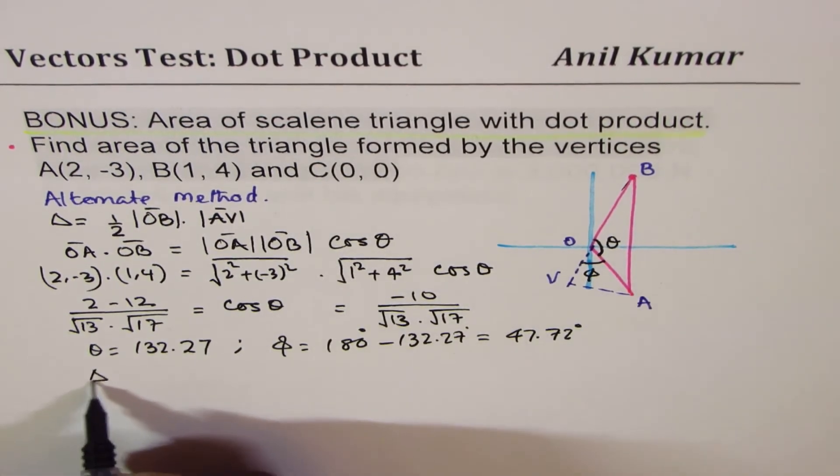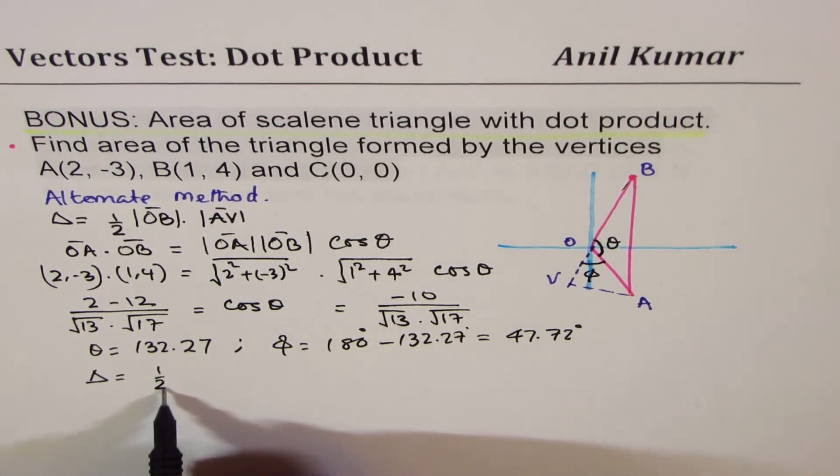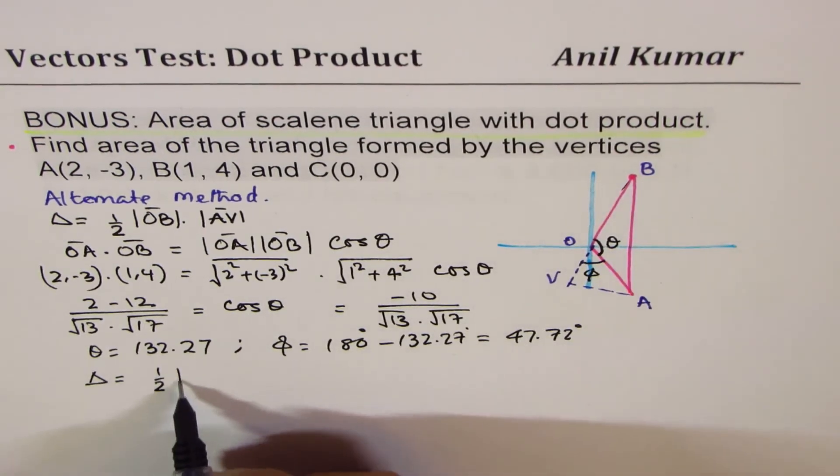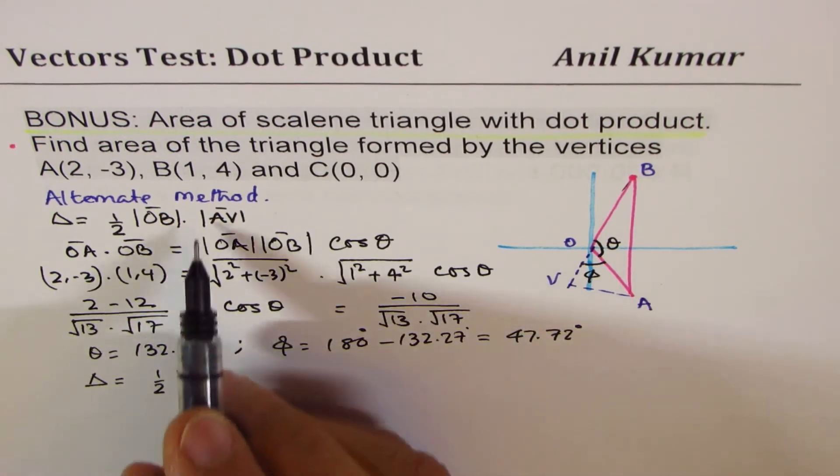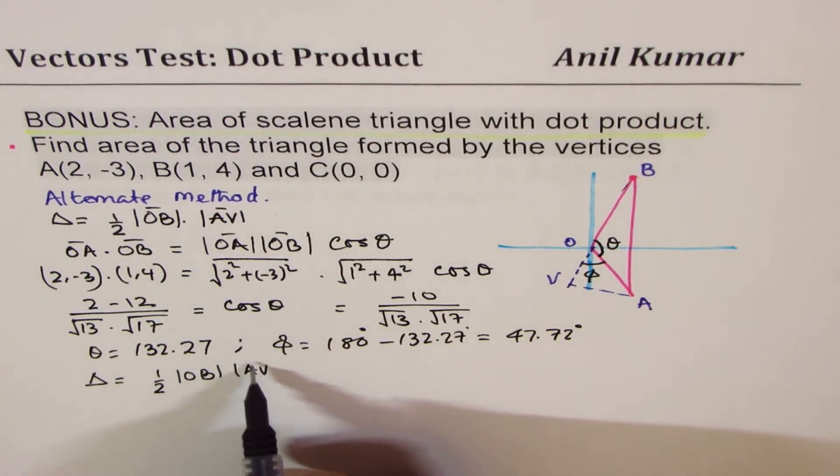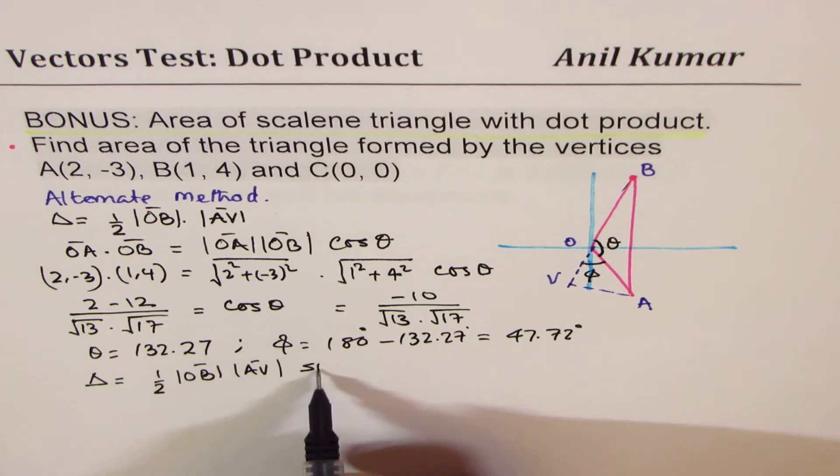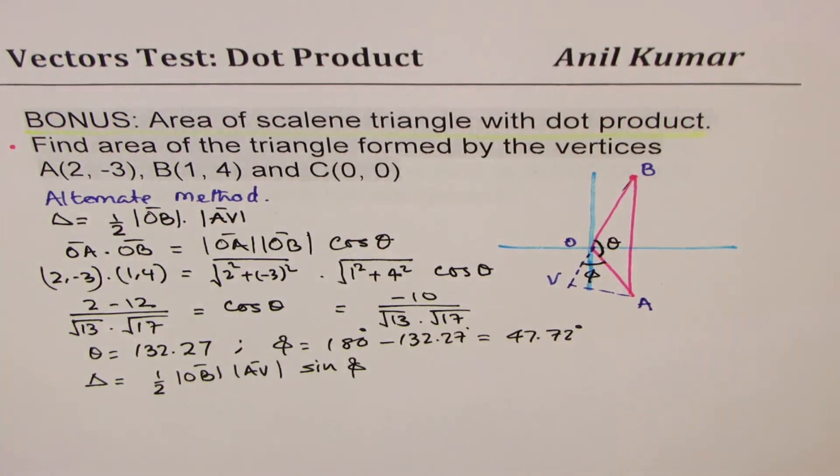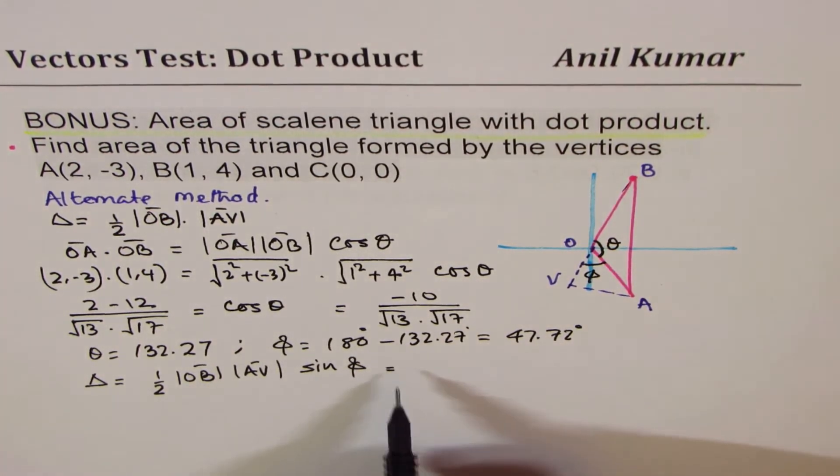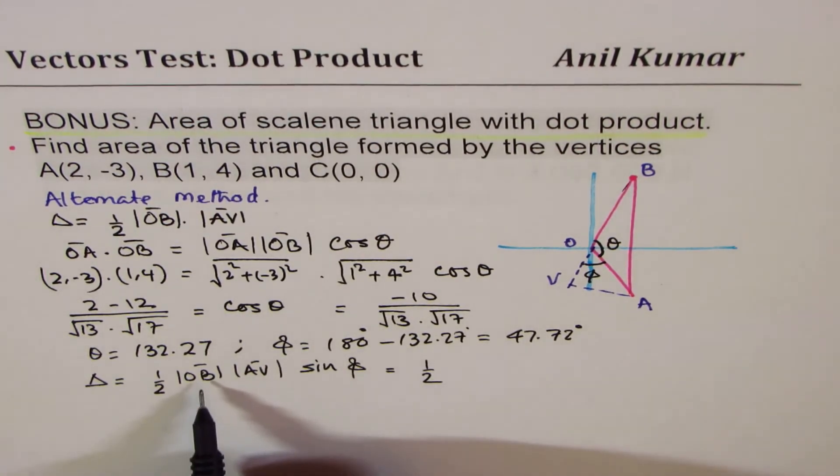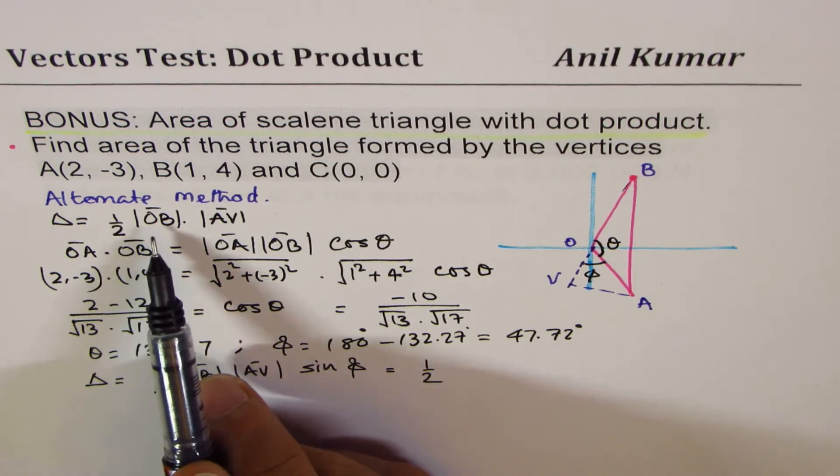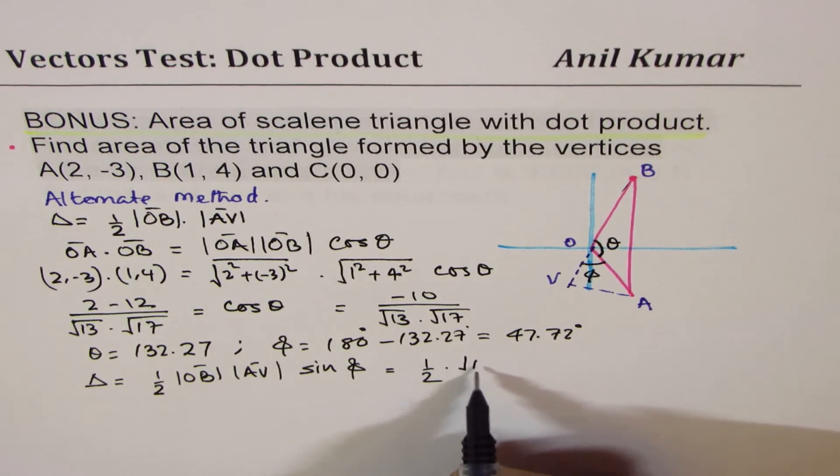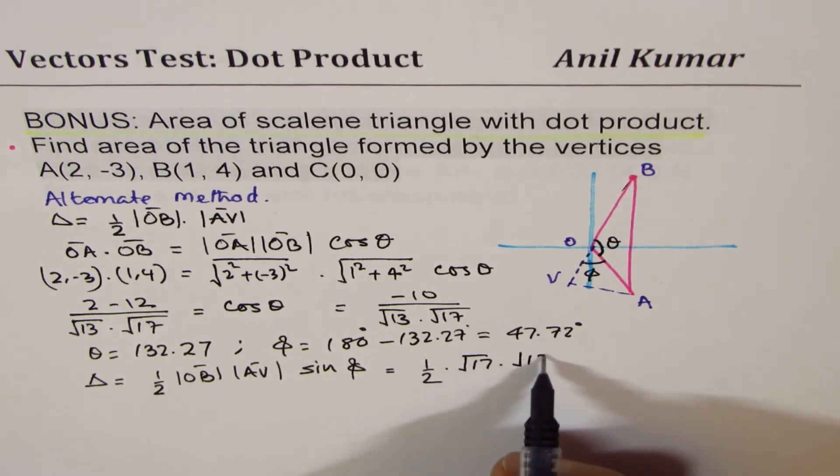Now we can also write area of the triangle as half the base OB, which is its magnitude, and AV is actually magnitude of OA times sin φ. Do you see that? So we know half magnitude of OB and OA—we have √17 and √13.